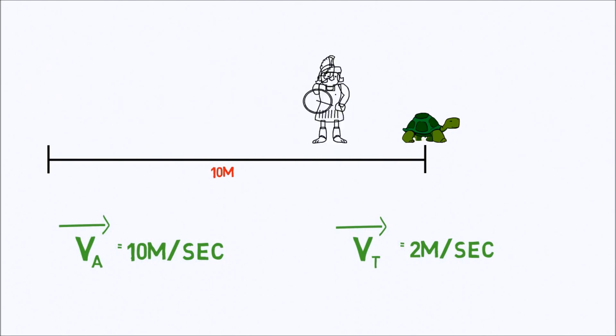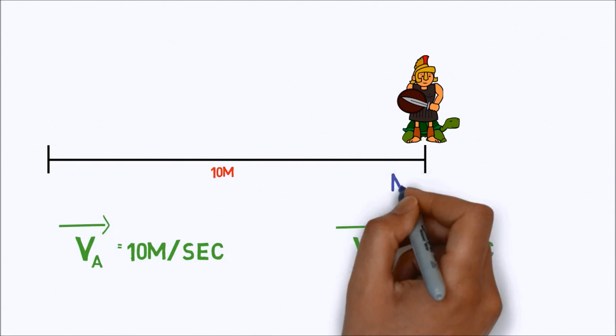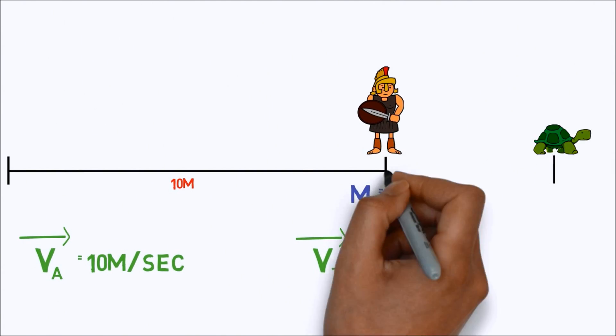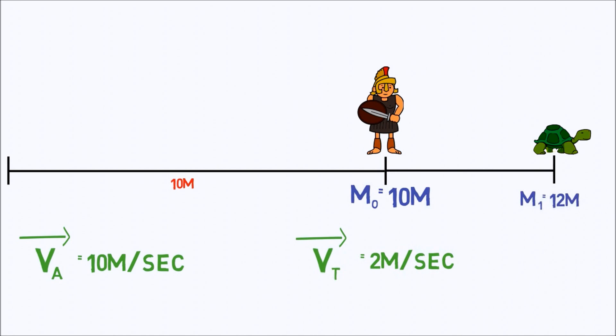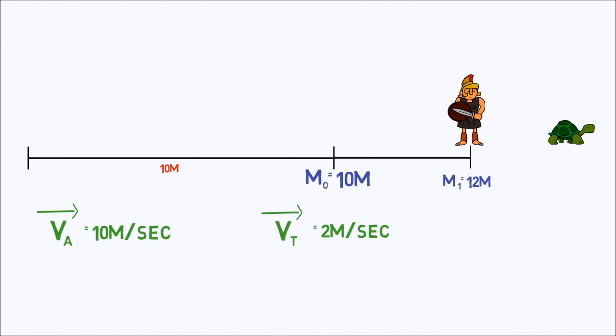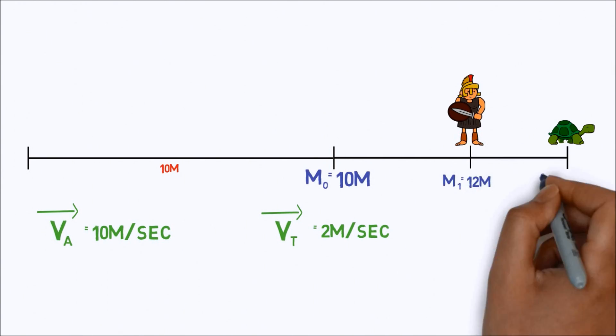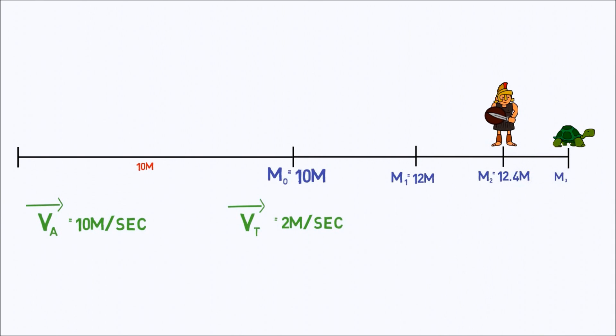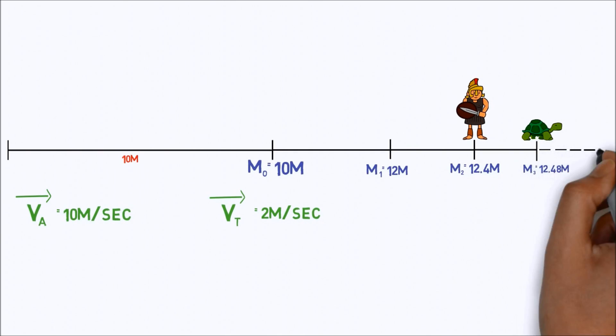Now, by the time Achilles has reached the point where the tortoise started, M naught equals 10 meters, the tortoise will have moved on 2 meters to M1 equals 12 meters. When Achilles reaches M1, the tortoise will have moved on 0.4 meters to M2 equals 12.4 meters. When Achilles reaches M2, the tortoise will still be ahead by 0.08 meters, and so on. Each time Achilles reaches the point where the tortoise was, the reptile will always have moved a little way ahead.